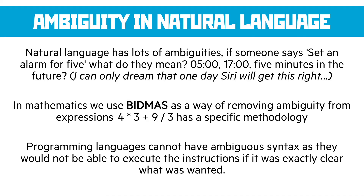So if you've got 4 times 3 plus 9 divided by 3, you apply BIDMAS — brackets, indices, division, multiplication, addition, and subtraction — and we know which order to perform those operations, making it unambiguous what that mathematical statement means. Programming languages must likewise be unambiguous — they can't have any ambiguous syntax because the computer would not be able to execute the instructions if it wasn't clear exactly what was intended, which is why we need that unambiguous syntax.